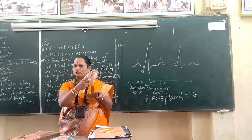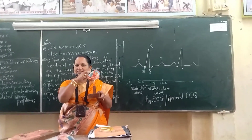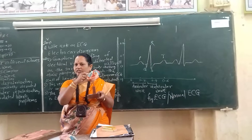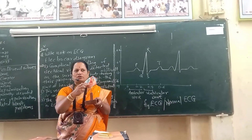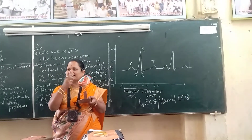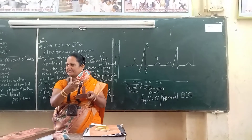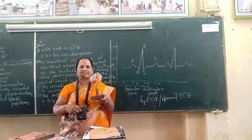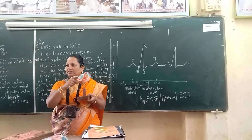The human heart is a hollow muscular organ with an auricular system and a ventricular system. It has an auricular phase and a ventricular phase. When auricles are in the contraction stage, ventricles are in the relaxed stage, and when ventricles are in the contraction stage, auricles are in the relaxed stage.